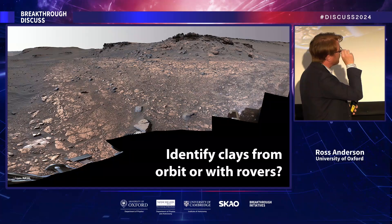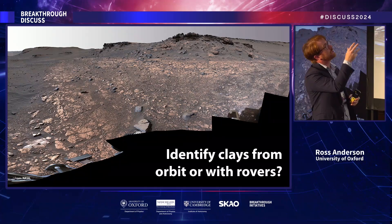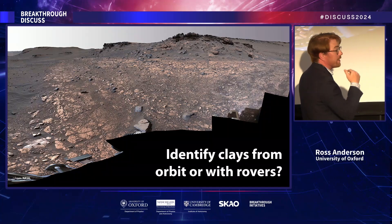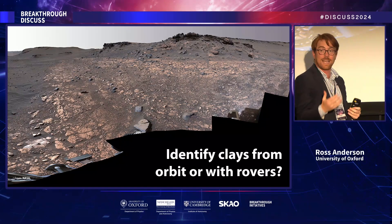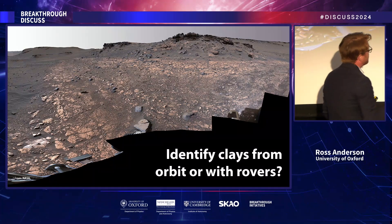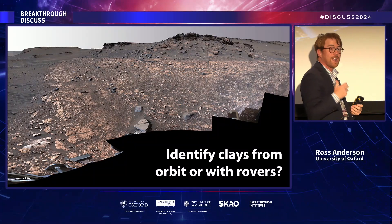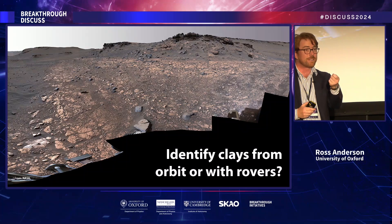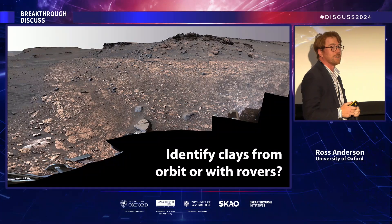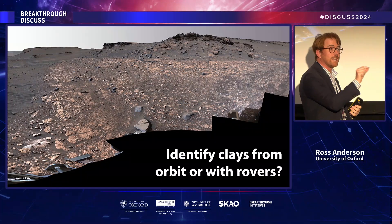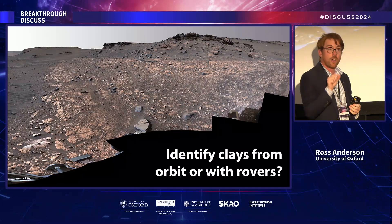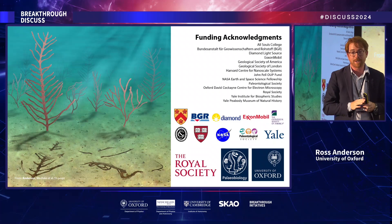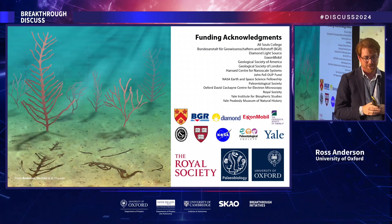I want to finish with this: a picture from the Perseverance rover from Jezero Crater. The reason why Perseverance landed in Jezero Crater is because, from orbital data, we were able to show that the crater had clay minerals — those minerals I've just told you are really important for preservation. So I think this can really highlight where we should go look on other planets and other planetary bodies for life in the universe. Thank you very much.